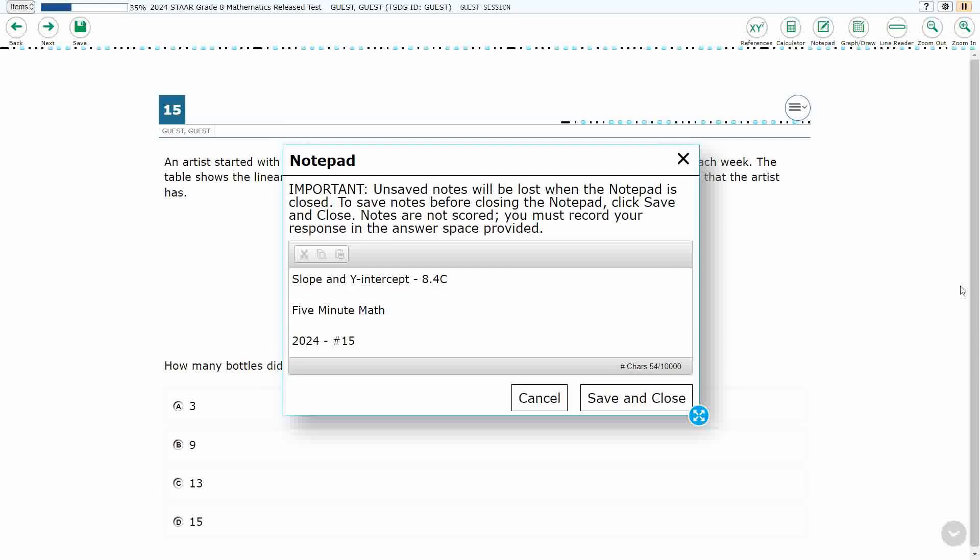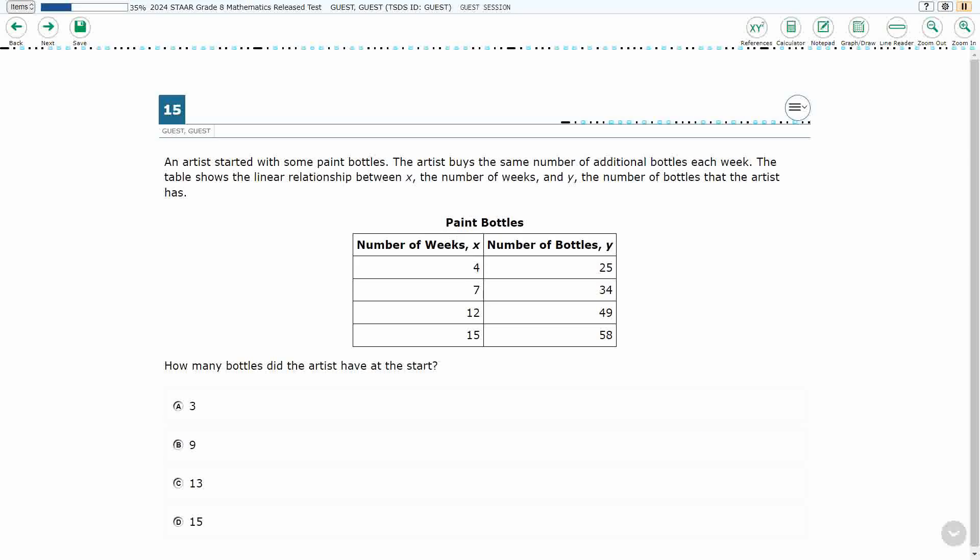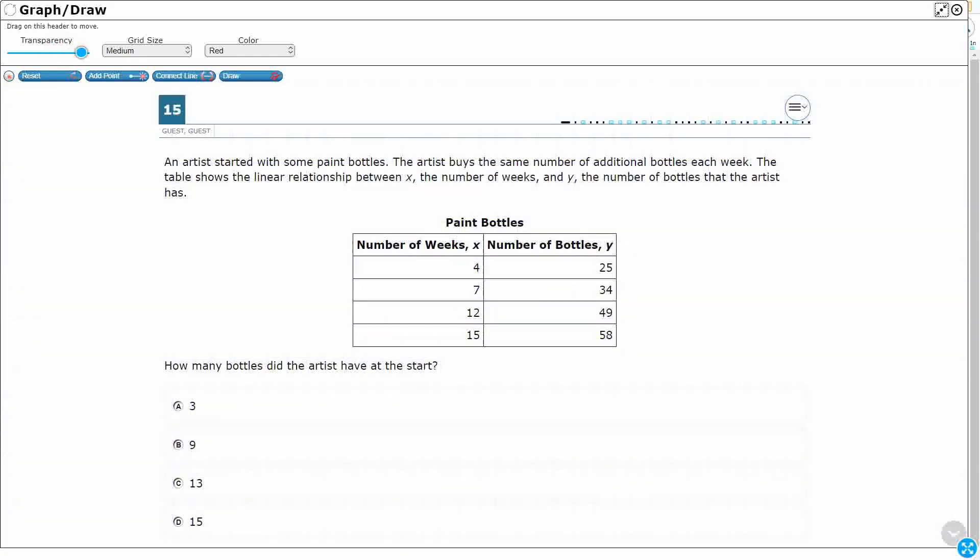Hello, and welcome to 5-Minute Math. Today we are looking at the 8th grade concept of slope and y-intercept. This is standard 8.4c in the great state of Texas, and we are using item number 15 of the 2024 released STAAR test. If you haven't done so already, please go ahead and take a moment to pause the video, work this problem out on your own, unpause it, and we will look at our answers together.